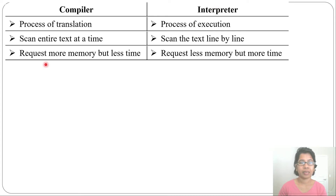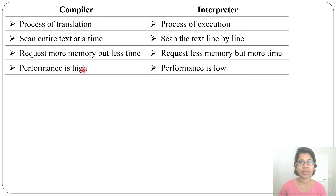A compiler requires more memory but less time, while an interpreter requires less memory but more time. Compiler performance is high; interpreter performance is low.